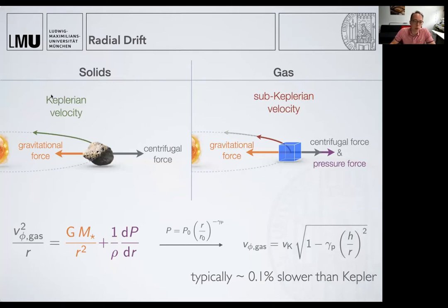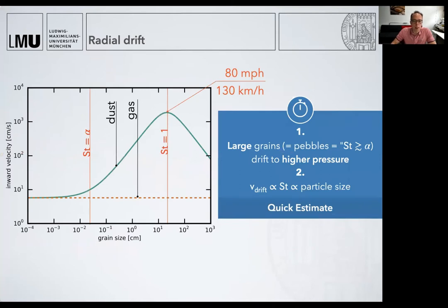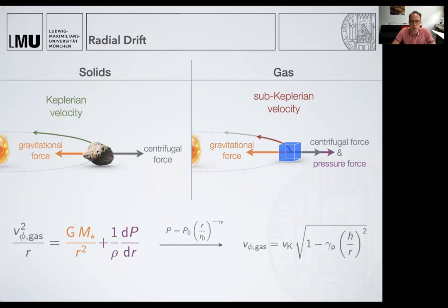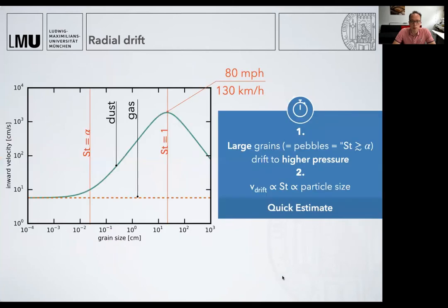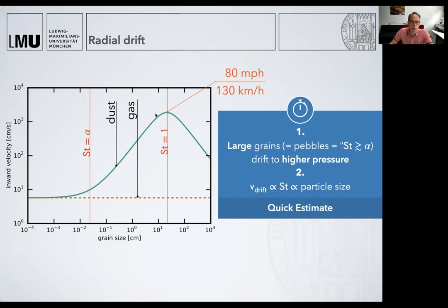So if a dust particle tries to orbit at Keplerian speed, it would have a headwind of 60 meters per second, and you can imagine that these drag forces are important. Particles that start to decouple lose angular momentum to the gas and drift inwards. This depends on the pressure gradient. Large grains — I will sometimes call them pebbles, you can also define them as having a Stokes number larger than the turbulence parameter alpha — tend to drift to higher pressure. The drift speed is proportional to the stopping time and therefore also proportional to the Stokes number, meaning larger particles have a higher inward velocity. If we go to very small particles with Stokes number smaller than alpha, they just follow the gas velocity.